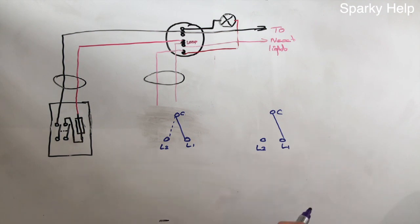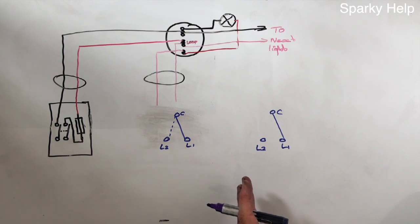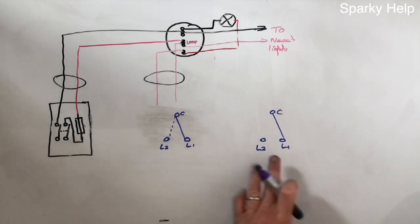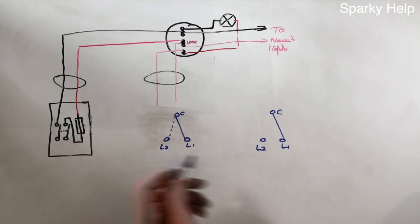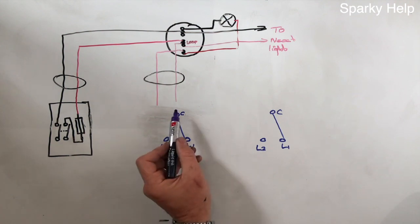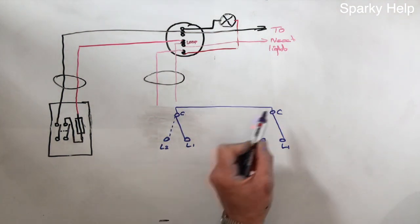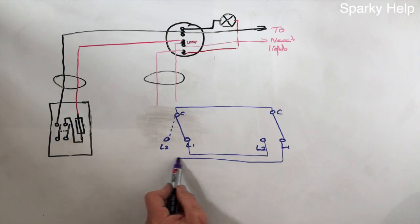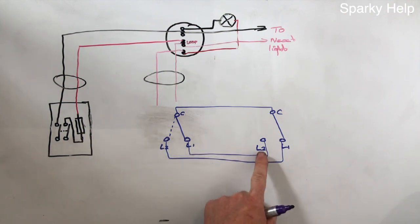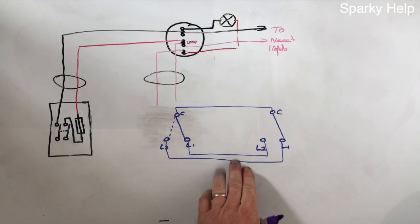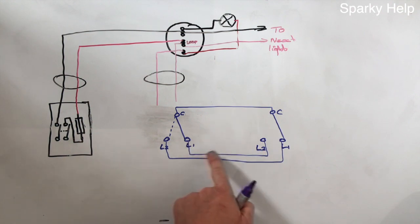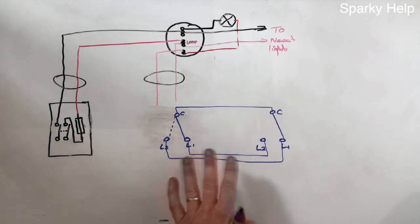The easiest way, for drawing purposes, is to get a three-core and earth cable — because we take earth everywhere — and link the two switches. We run the cable between the two and connect the strappers. It doesn't matter whether you go L1 to L2 or L2 to L1 — it makes no odds. The one connection to get right is common to common; where the strappers go between L1 and L2 doesn't matter.